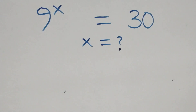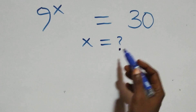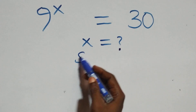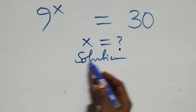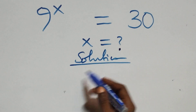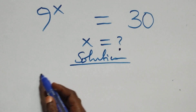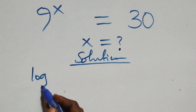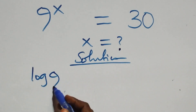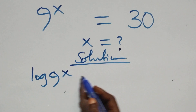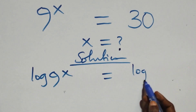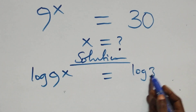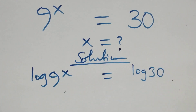Hello, you are welcome. How to solve this nice exponential equation. On what we have here, we take the log on both sides. At this, we have log 9 raised to the power x equals to log 30.